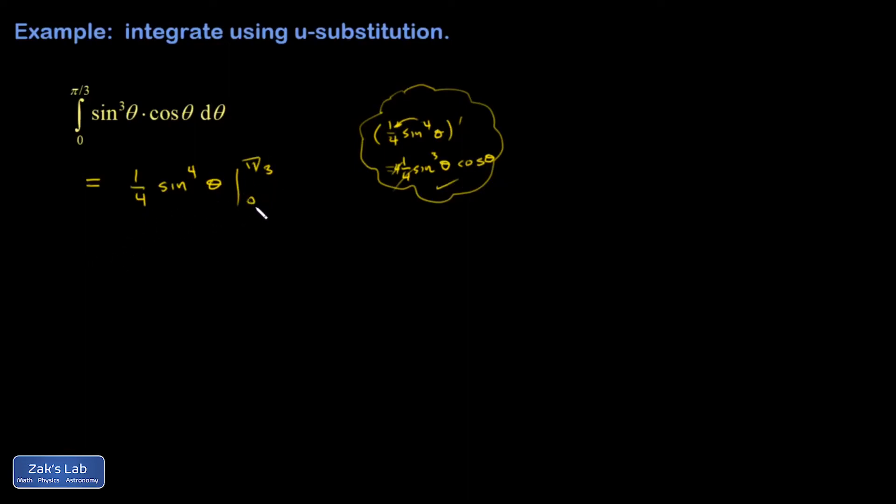Now I look at my limits of integration, and I notice that if I plug a zero in for theta, the sine of zero is zero. So forget about that. That happens pretty frequently, so I like to just cross them out up here in the limits. So all I have to put in is the pi over three.